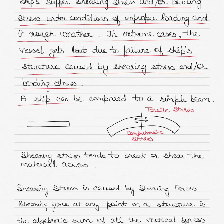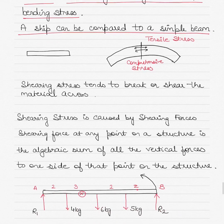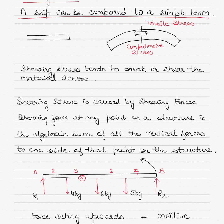A ship can be compared to a simple beam. If the beam is bent initially, the tensile strength of the beam helps it to absorb the stress, but after a while if the stress starts to pile up, the compressive stresses and strains make the steel bar or beam bend. Just like a vessel, shearing stress tends to break or shear the material across.